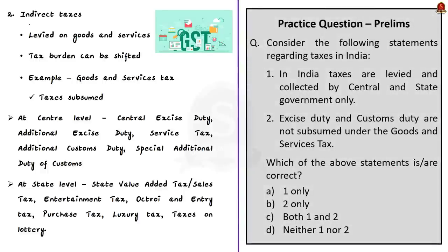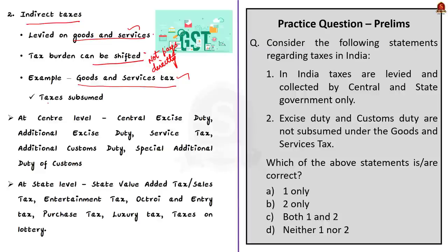Indirect taxes are levied on the sale and provision of goods and services. They differ from direct taxes because they are not levied on a person who pays them directly to the government. Instead, they are levied on products, so the tax burden can be shifted. Goods and Services Tax is the biggest reform in the indirect tax regime. It subsumes many taxes like central excise duty, additional excise duty, service tax, additional customs duty (commonly known as countervailing duty), and special additional duty of customs.